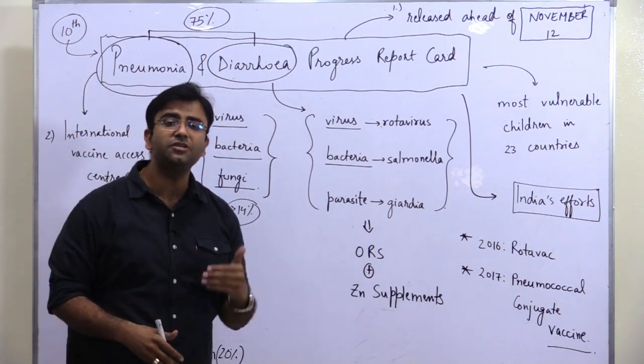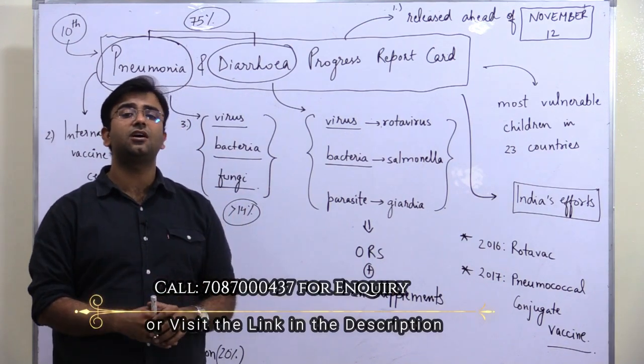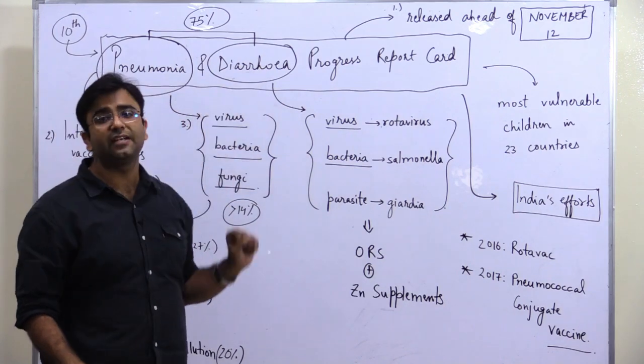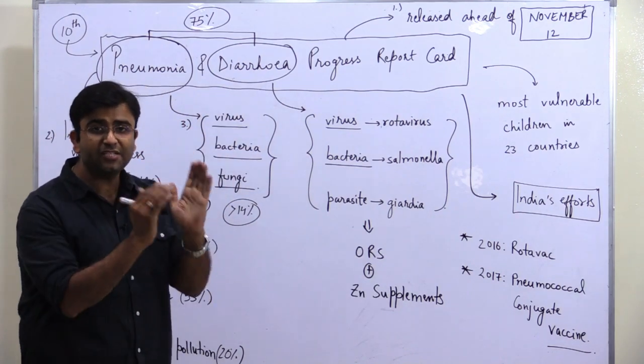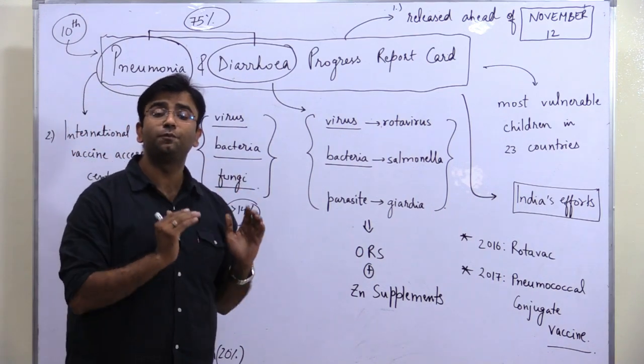Last year, 127,000 children died because of pneumonia and diarrhea. This is why these two diseases are of very importance for your UPSC prelims.